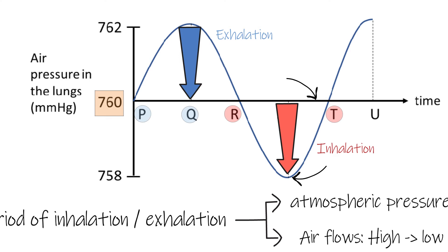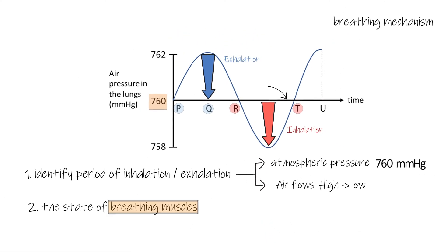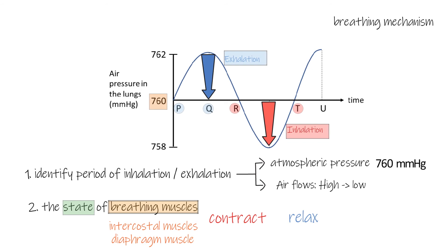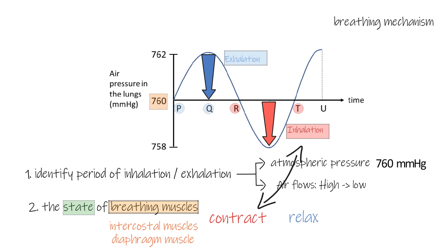Some questions will ask for the states of breathing muscles in a period. The breathing muscles are the intercostal muscles and the diaphragm muscle. There are only two states of muscle: contract or relax. After you identify which period is inhalation or exhalation, it will be very easy for you to answer this question. Breathing muscles contract during inhalation and relax during exhalation.